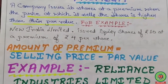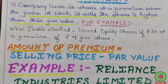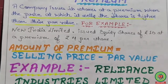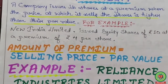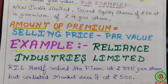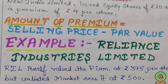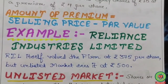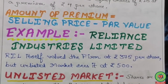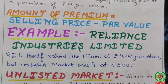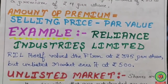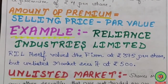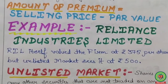For example, New India Limited issued equity shares of rupees 10 at a premium of rupees 4 per share — meaning 4 rupees extra charged above face value due to goodwill or some other reason. How to calculate premium: amount of premium = selling price minus par value. Another example: Reliance Limited valued the firm at rupees 375 per share, but the unlisted market valued it at rupees 500, so the difference of rupees 125 is considered the premium.